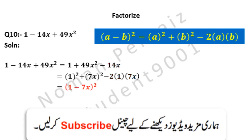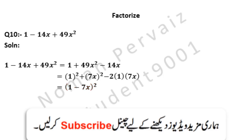Now we can apply the formula to write it as (a minus b) whole square. Our a is 1 and b is 7x, so we write (1 minus 7x) whole square. Hence this is our answer.